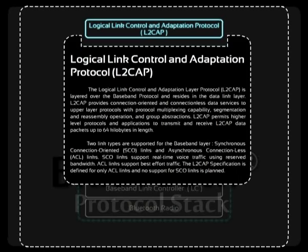Next is the Logical Link Control and Adaptation Protocol, L2CAP. L2CAP is situated on top of the baseband layer and next to the Link Manager protocol in the Bluetooth protocol stack. The L2CAP layer provides connection-oriented and connectionless data services to upper layers. The four main tasks for L2CAP are multiplexing, segmentation and reassembly, quality of service, and group abstraction.